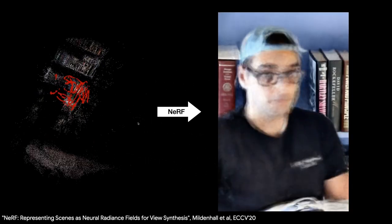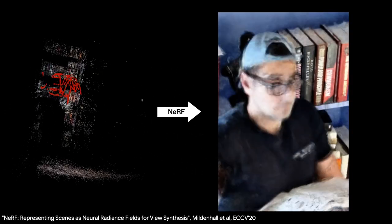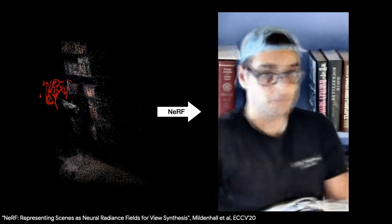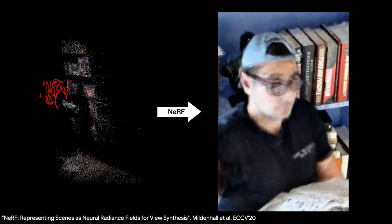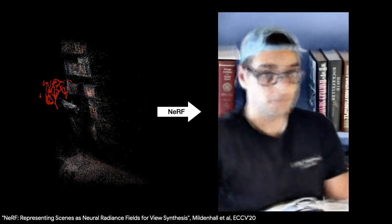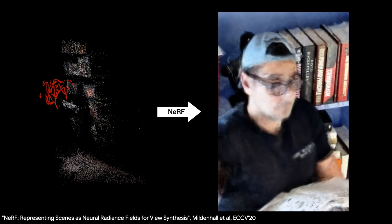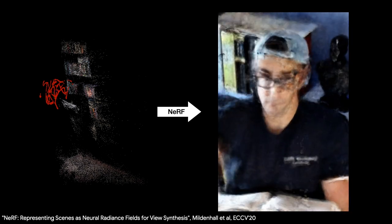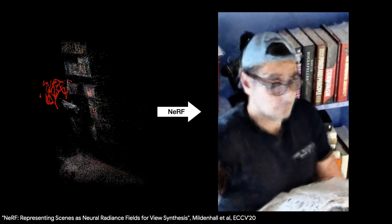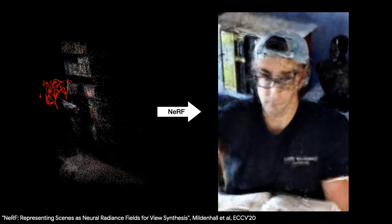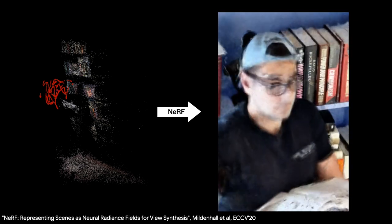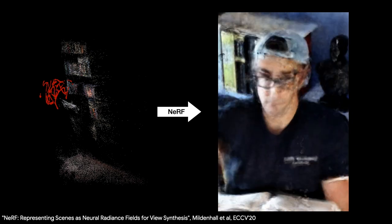Using the camera registration and images from structure from motion, you can train a Neural Radiance Field, or NeRF, a state-of-the-art method for novel view synthesis. Unfortunately, NeRF doesn't work well with non-rigid scenes, and the resulting renderings have significant artifacts on the person. This is because NeRF relies on photometric consistency between observations, but people tend to move while taking the video.